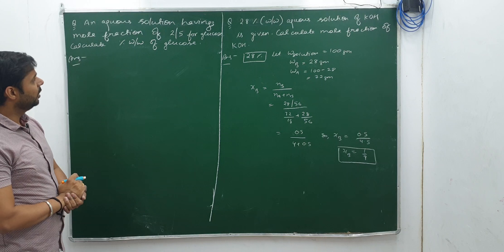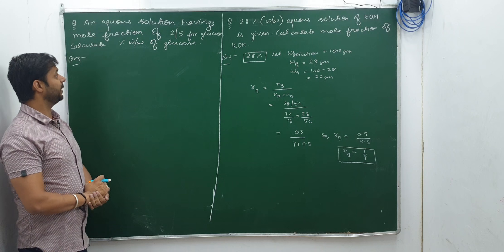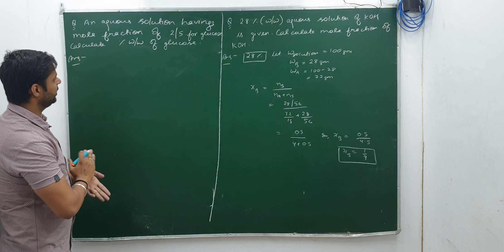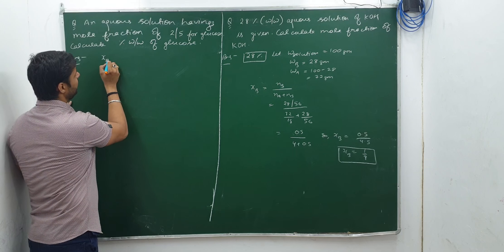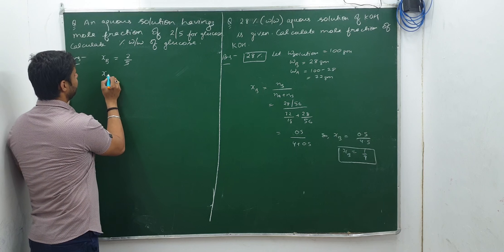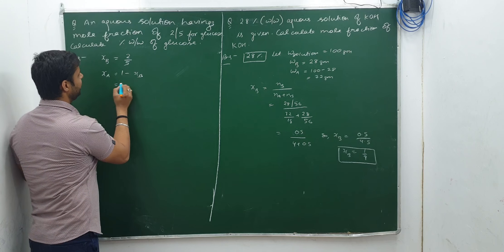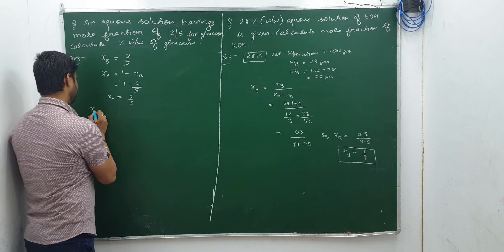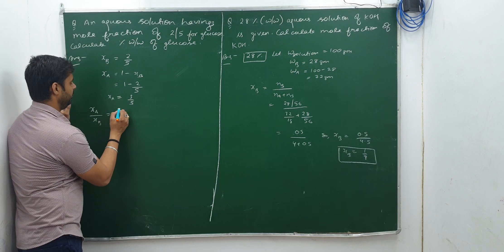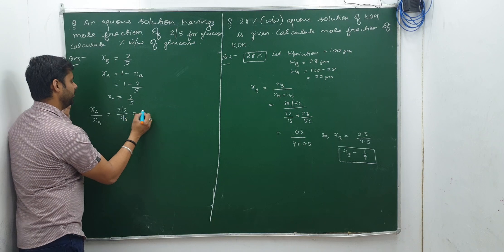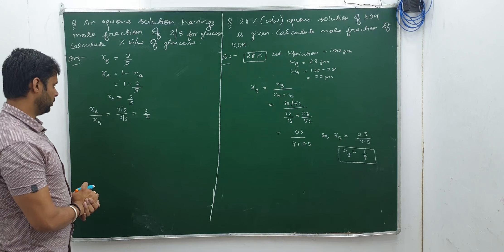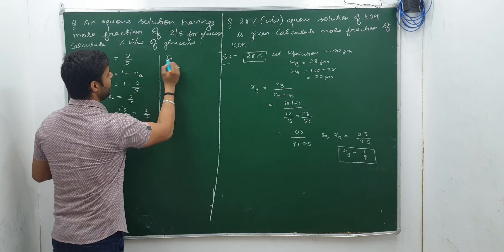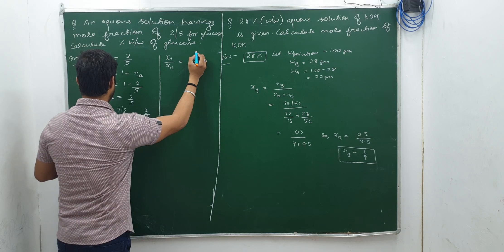You have been given mole fraction ξ_B = 2/5 for glucose and need to calculate percentage w/w. So ξ_A = 1 − ξ_B = 1 − 2/5 = 3/5. Then ξ_A / ξ_B = (3/5) / (2/5) = 3/2. Now ξ_A / ξ_B = (N_A / (N_A + N_B)) / (N_B / (N_A + N_B)) = N_A / N_B = 3/2.